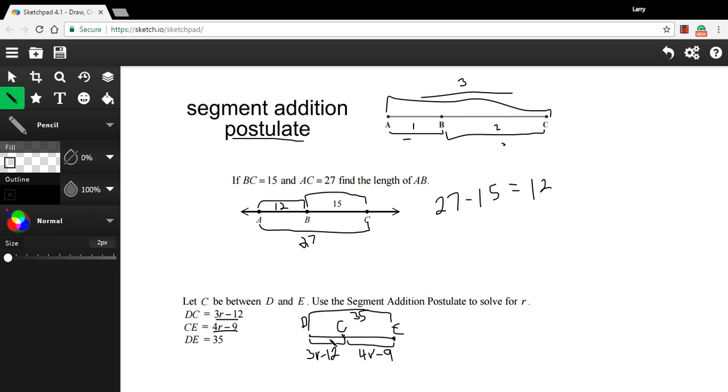So the segment addition postulate says that this chunk DC and this chunk CE, if you add them together, they should equal the total here from D to E. We're going to make an equation out of these facts and try to solve it for r. In this case it's pretty easy. I just have to add these two chunks together, so I'm going to put a plus right here. And those together should equal 35.